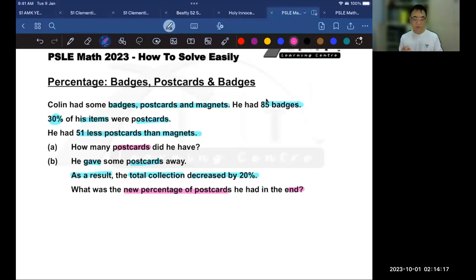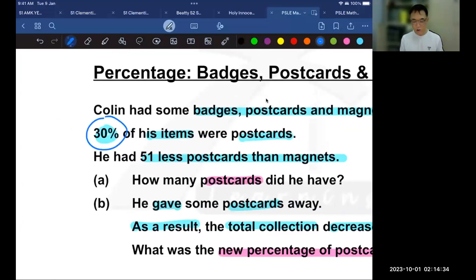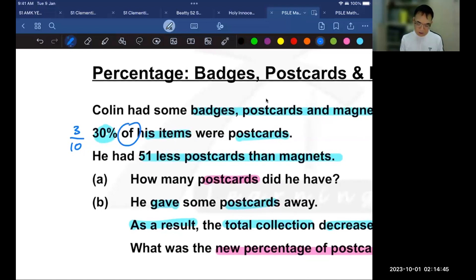Alright, now, one of the most important things to do when dealing with percentage questions is to change the percentage into a fraction because that makes the question easy to look at and easy to draw models with. So what we do now is, we take 30% and we change that into a fraction. 30% is 3 out of 10. So this means that the denominator 10 is representing all his items and the 3 here would be the postcards among his items.